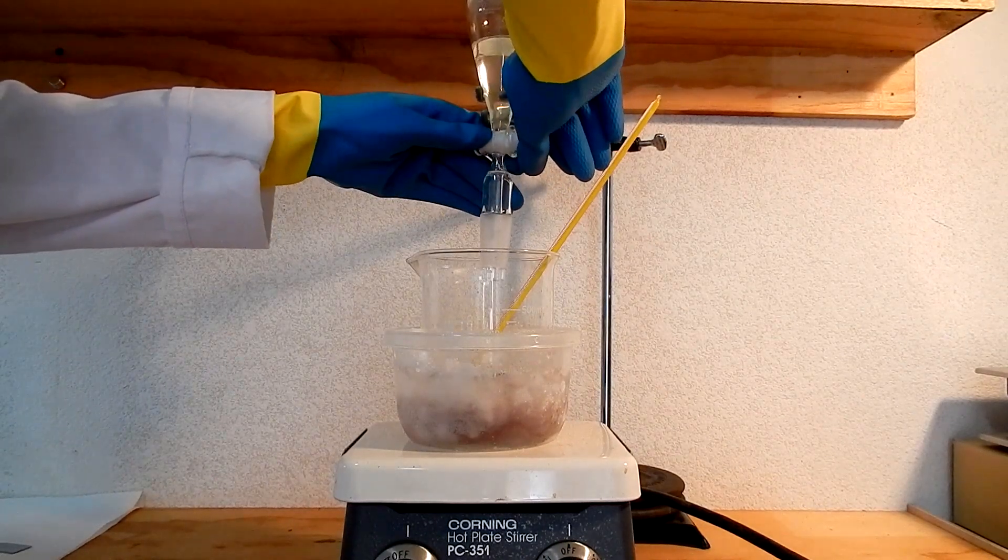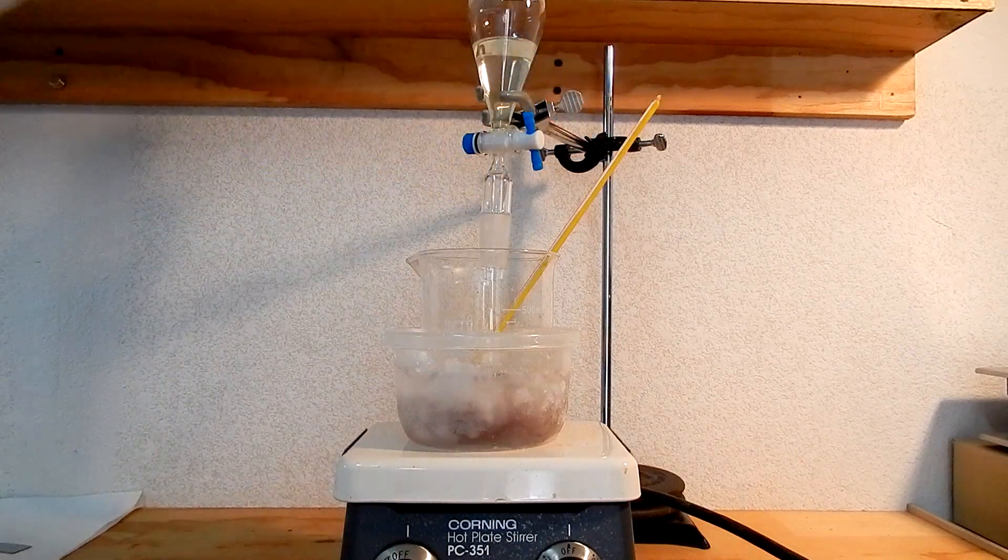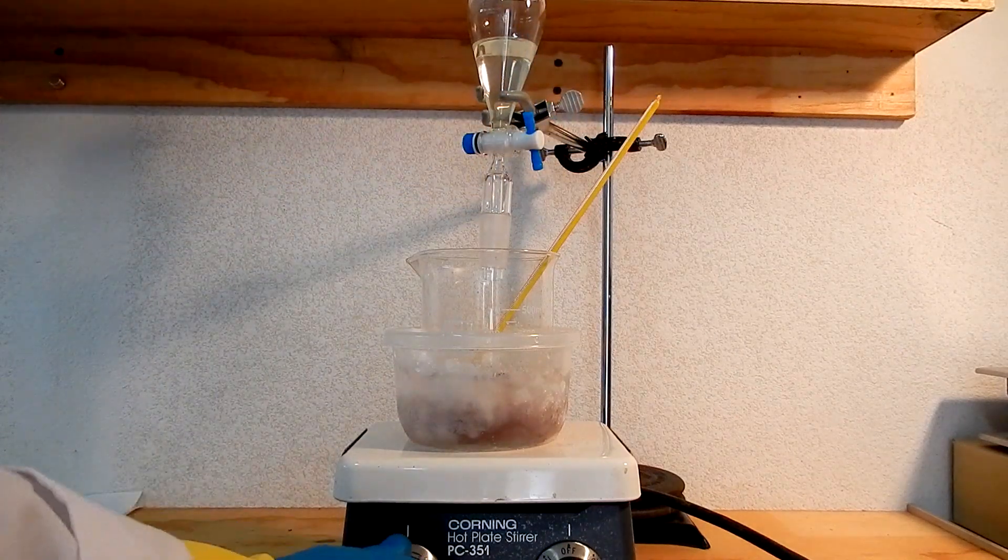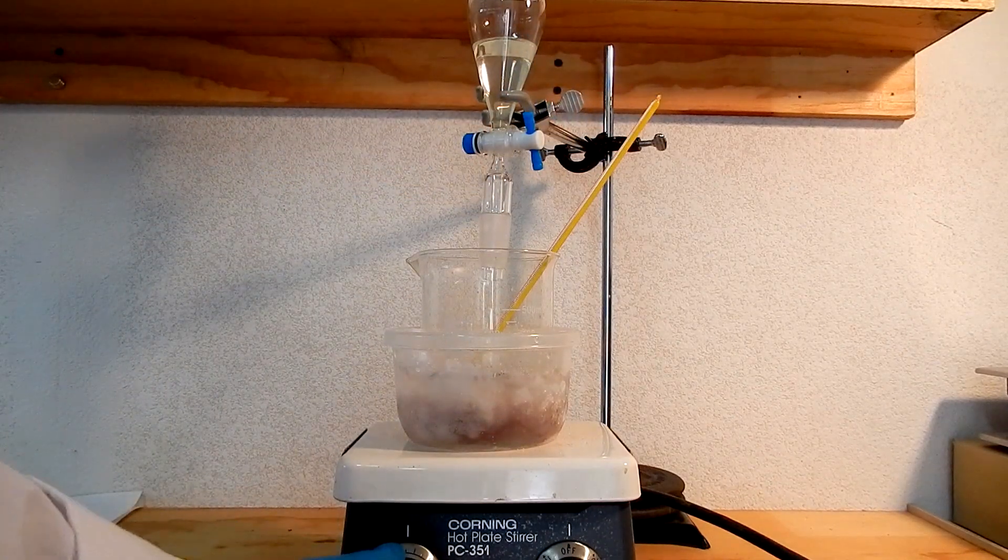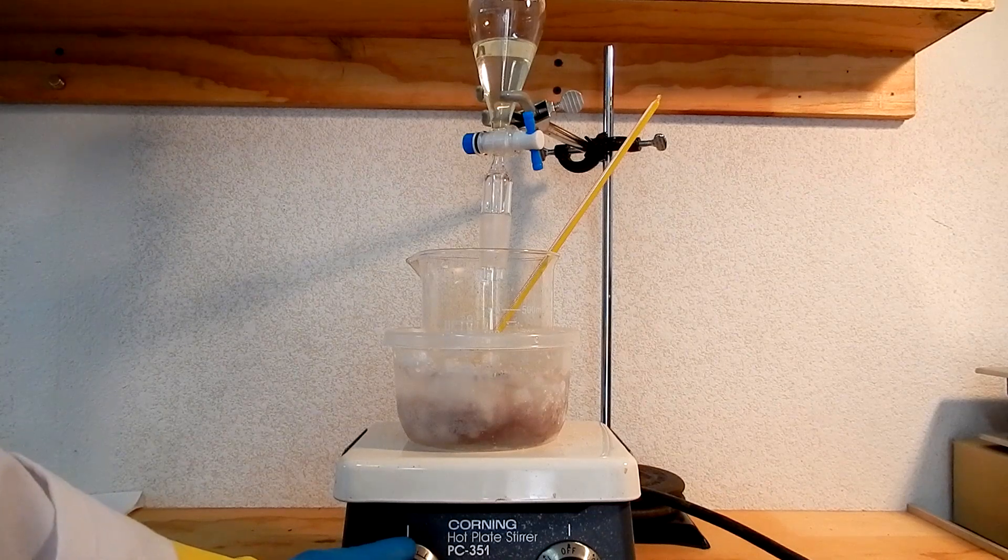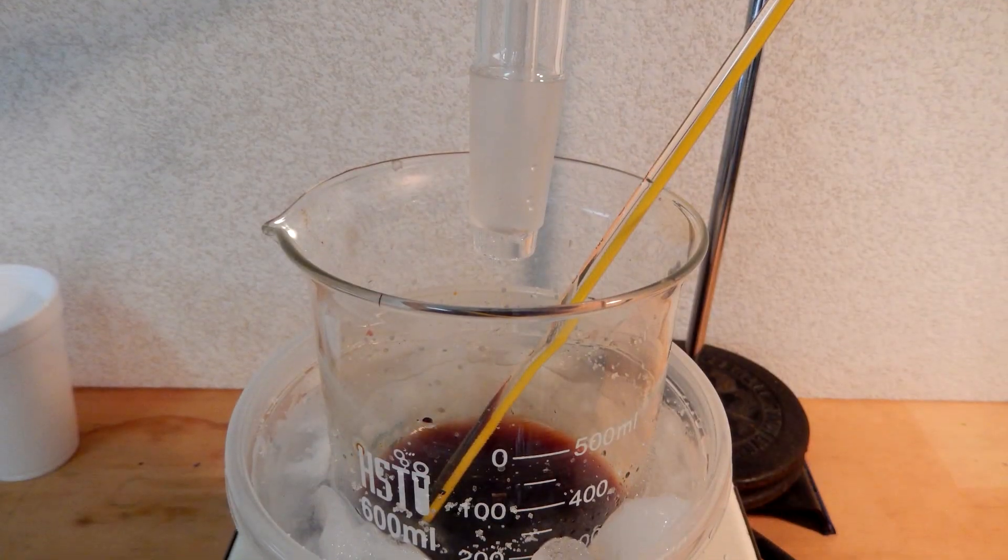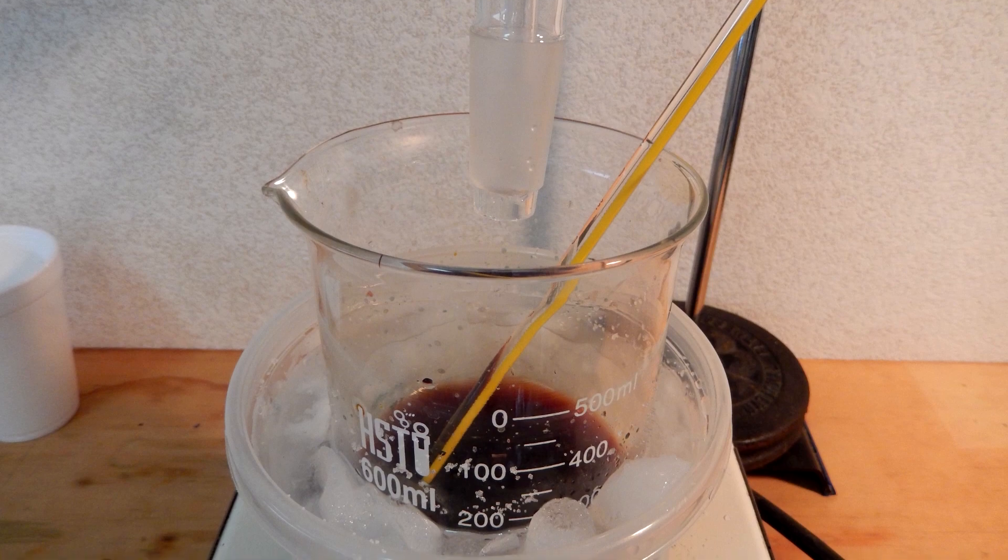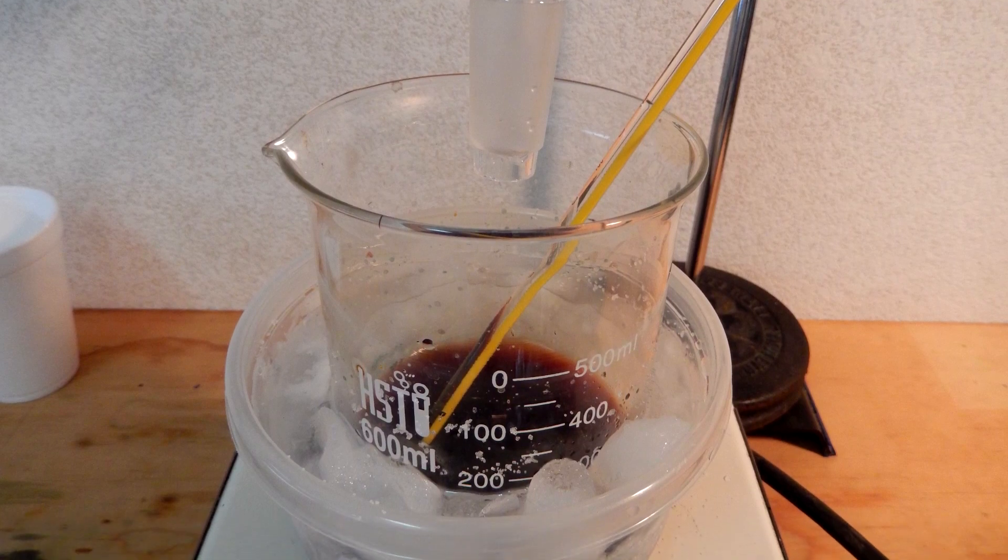If the temperature gets too high, brown-orange nitrogen dioxide gas will be released. Keep the magnetic stirrer stirring and use the salt ice bath for cooling throughout the entire addition. The white precipitate of aniline hydrochloride dissolves as it reacts with the nitrous acid.